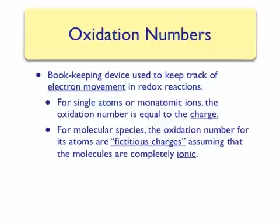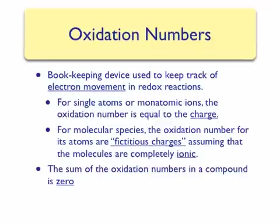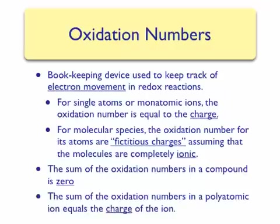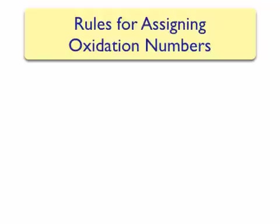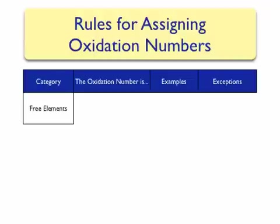There are a couple of rules to assigning oxidation numbers. The first is very similar to the rules we use to write chemical formulas for ionic compounds: the sum of all the oxidation numbers, or fake charges, must equal zero in a compound. If we are assigning oxidation numbers for elements in a polyatomic ion, the sum must equal the charge on the ion. The first rule applies to free elements — atoms not combined with other atoms to form a compound. The oxidation number of atoms in a free element equals zero.